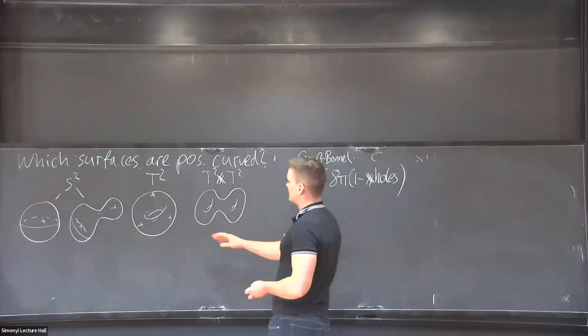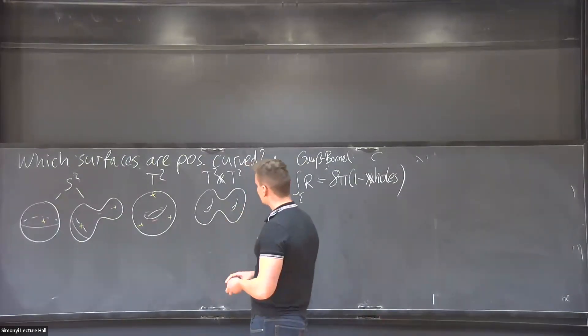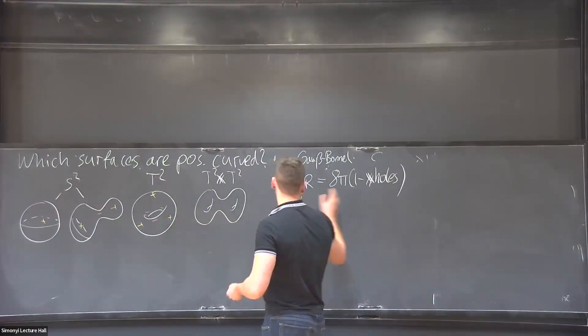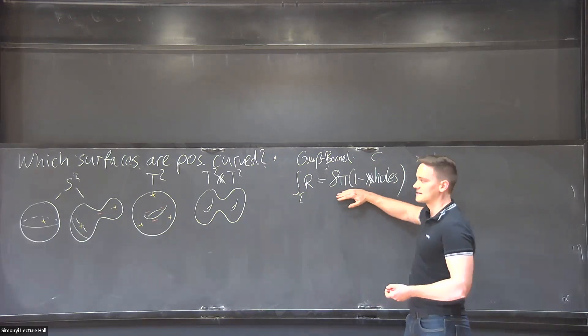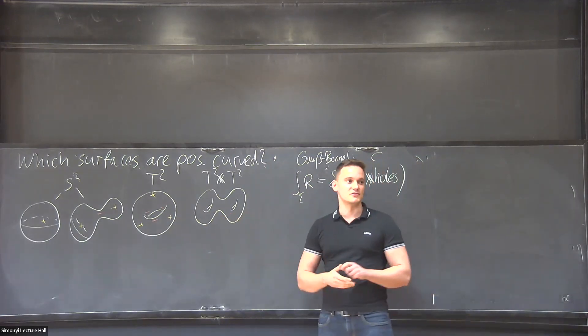But it will then also tell us that here in the torus, because we have one hole, the right hand side will be zero. So we'll never be able to make the curvature positive everywhere.